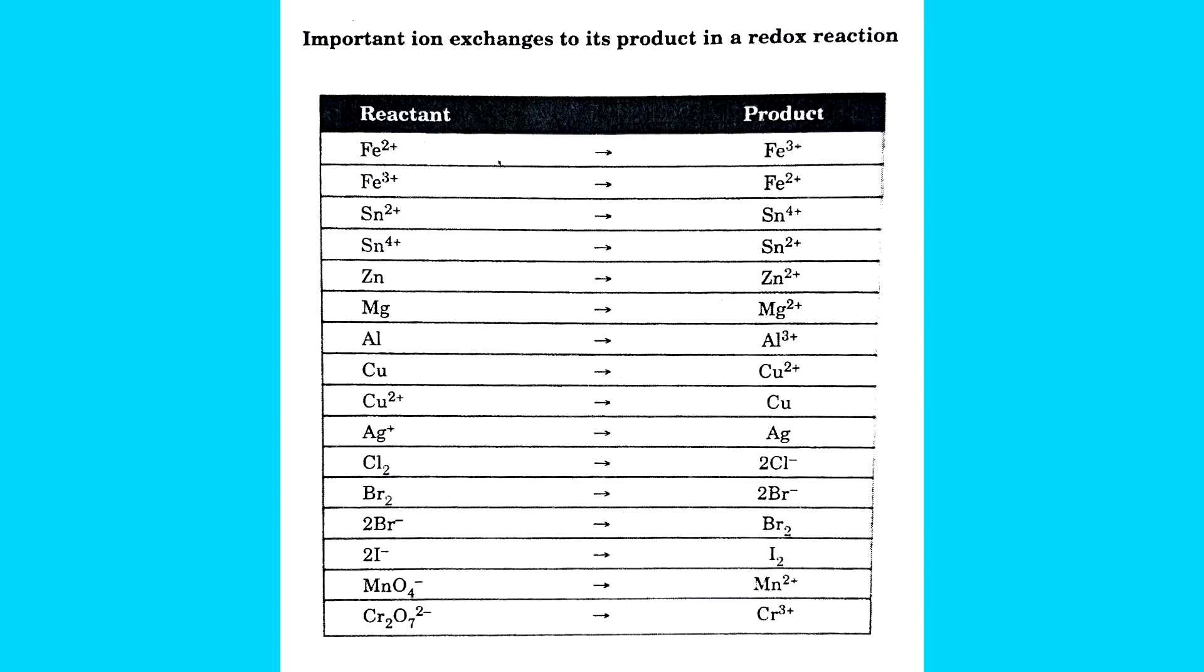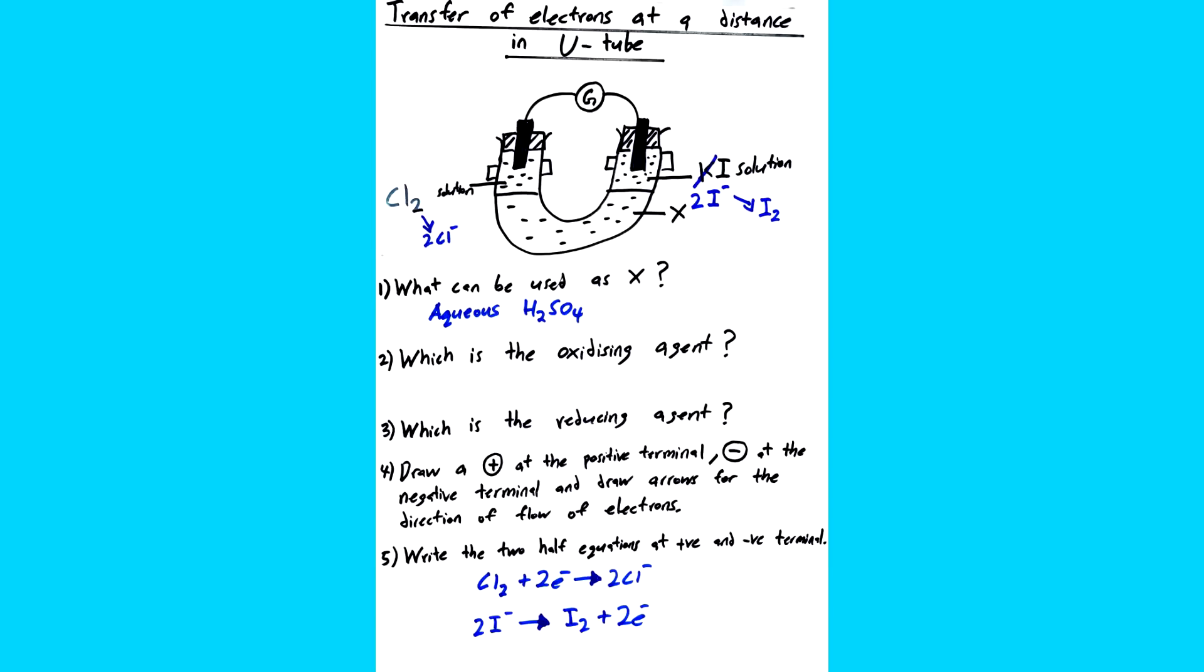I got to solve this very quickly because I memorized the table that I showed you guys before. Knowing all of this makes the question so much easier. Now that we have the half equation, now we know which solution releases electrons and which solution accepts electrons.